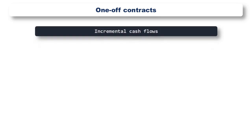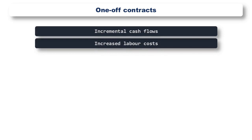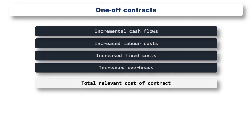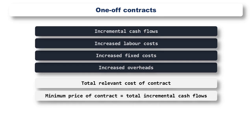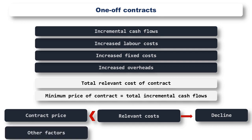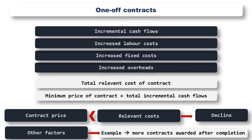Relevant costing principles can also be used for pricing up one-off contracts. The incremental future cash flows associated with the contract — such as increased labour costs, increased fixed costs, increased overheads, and so on — need to be combined to find the total relevant cost of the contract. The minimum price will then be the total of these future incremental cash flows. If the contract price is lower than the relevant costs, then the contract should be declined from a financial perspective. There may however be other factors that mean a company would take on the contract despite the potential loss — for example where a long-standing customer needs a one-off contract fulfilling, making it highly likely that more profitable contracts will follow in the future.